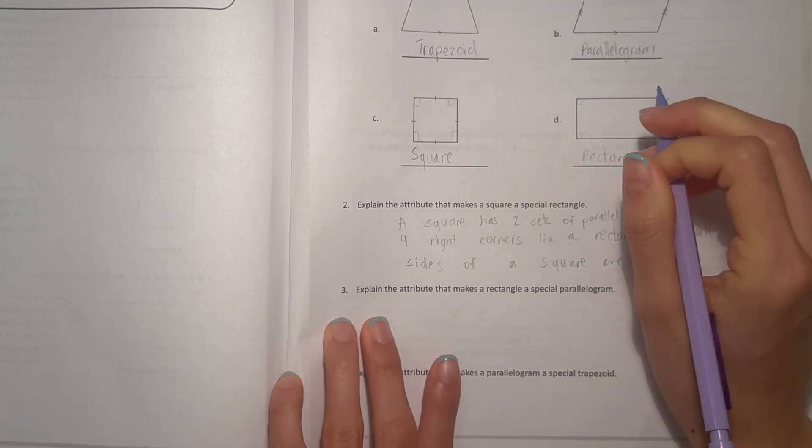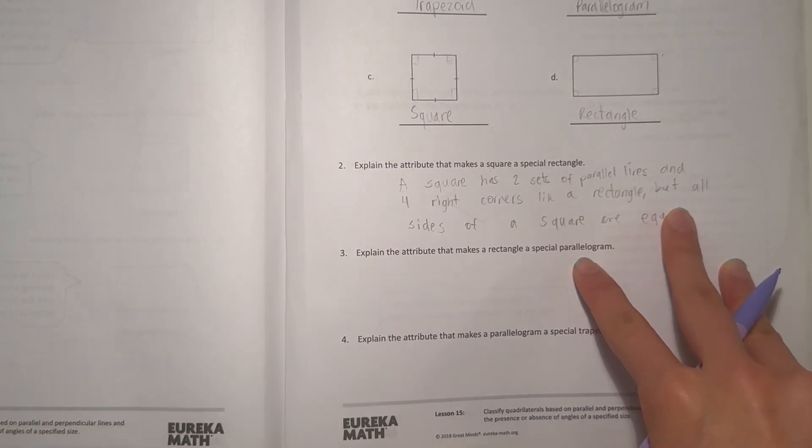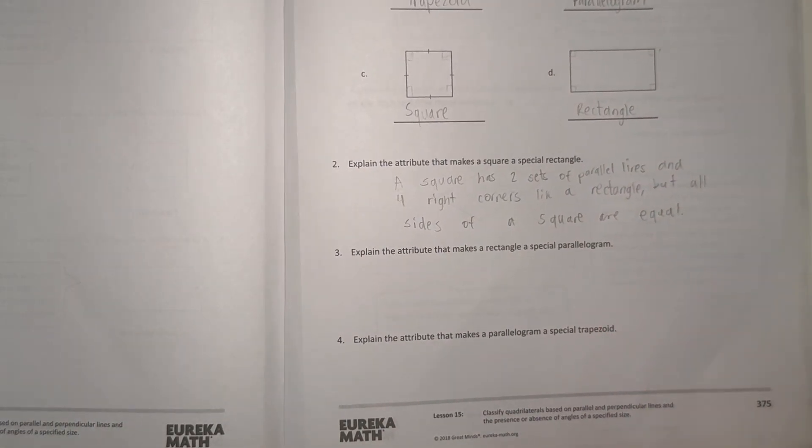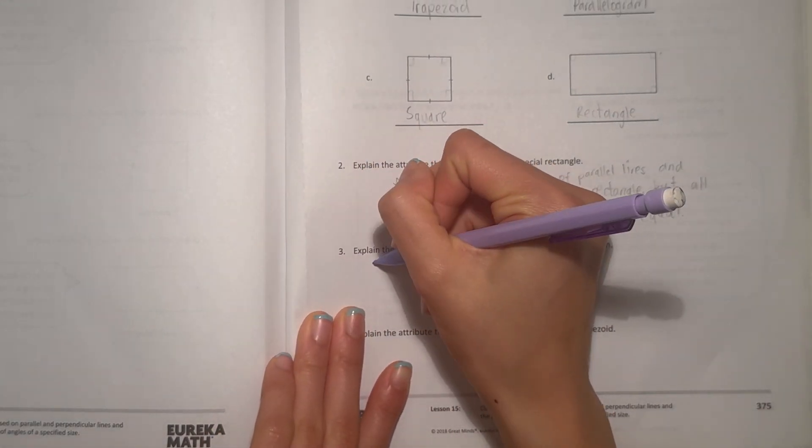And number three, explain the attribute that makes a rectangle a special parallelogram. Well, a parallelogram has two sets of parallel lines. But however, for a rectangle, it has two sets of parallel lines, but it also has right corners. So,